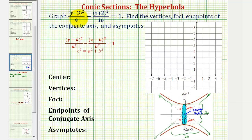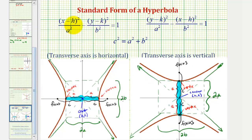I always think of this as: if the positive fraction is the y part, we have a vertical transverse axis. If the x part of the equation is positive, then we have a horizontal transverse axis. To review: if the x part of the equation is first minus the y part, we'll have a horizontal transverse axis and the hyperbola opens left and right. If the y part is first minus the x part, we have a vertical transverse axis and the hyperbola opens up and down.